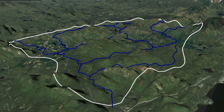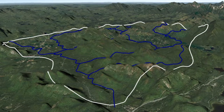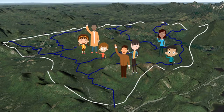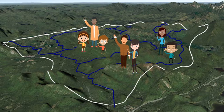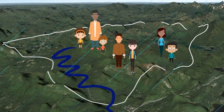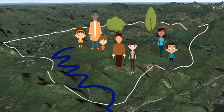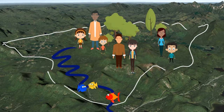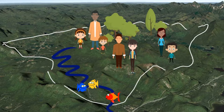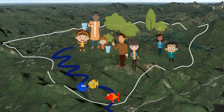Everyone in the world lives within a watershed. If we know how much water flows into a watershed, and how much water is needed for all living things that live within the watershed, then we can understand how to manage our watershed to supply enough water to meet everyone's needs.